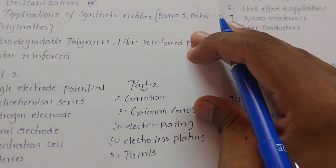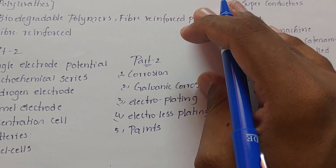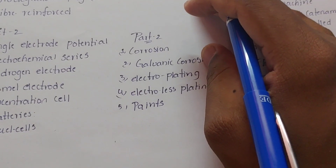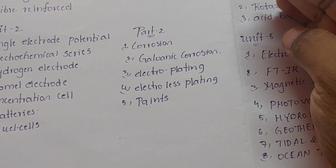Coming to Unit 2 — in this unit there are two parts. There are 2 chapters which we can divide into one single unit.